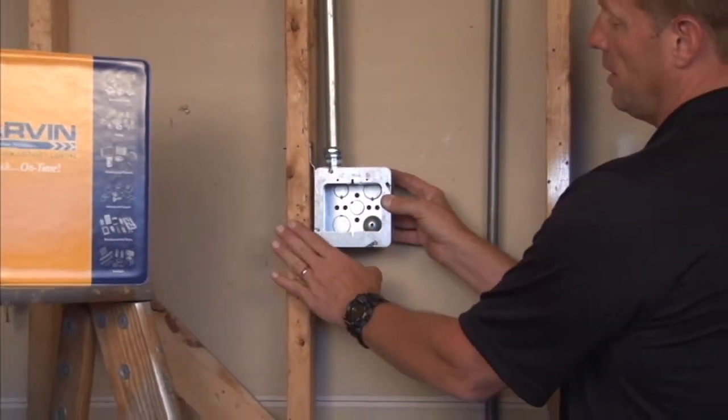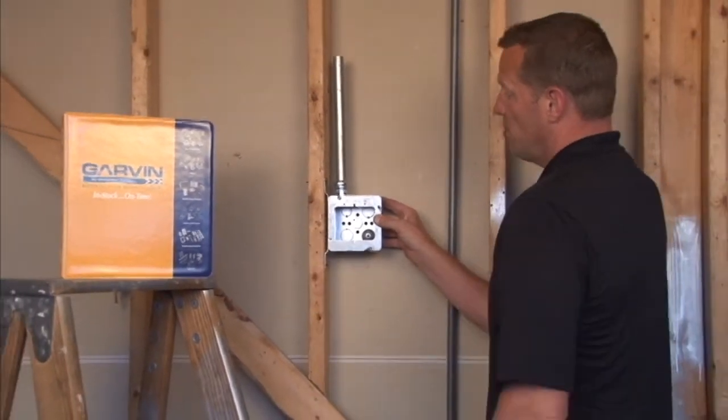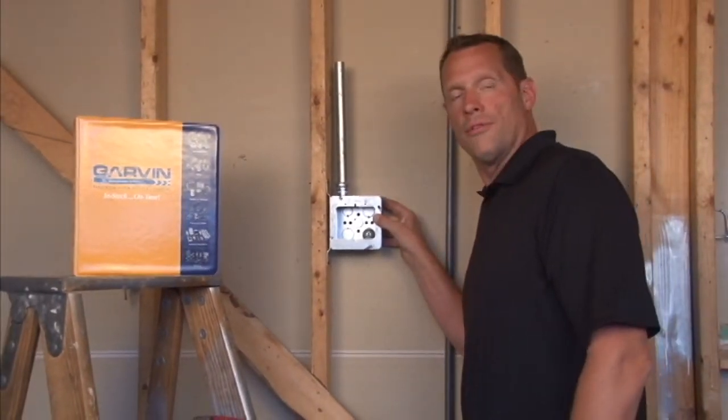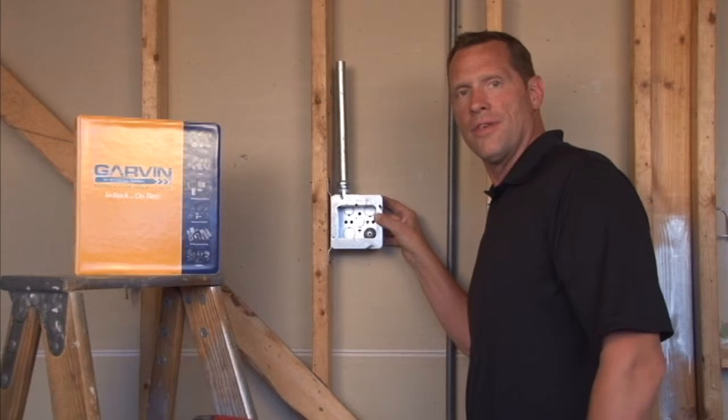This particular unit is made, again, for very thin wall coverings like paneling or very, very thin drywall.